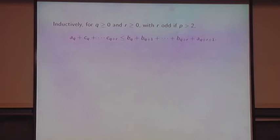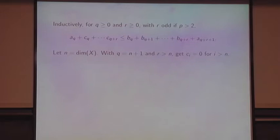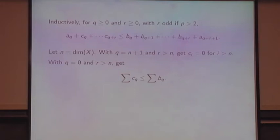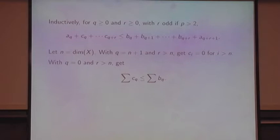Inductively, for q greater or equal to 0 and r greater or equal to 0, taking r odd or p greater than 2 in order to get rid of the auxiliary terms, you find these inequalities. If you take n to be the dimension of X — which we assumed was finite dimensional — and take q equals n plus 1, we get CQ equals 0 for i greater than n. In our theorem, this is where you get M less than or equal to N because the higher dimensional things are zero. With q equals 0 and r greater than n, we get the other inequality.